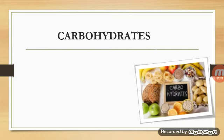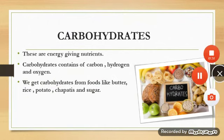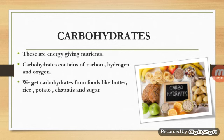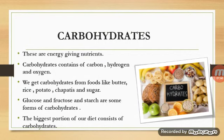What are carbohydrates? These are energy-giving nutrients. Carbohydrates contain carbon, hydrogen, and oxygen. We get carbohydrates from foods like rice, potato, chapatis, sugar, glucose, and fructose. Starch is also a form of carbohydrate. The biggest portion of our diet consists of carbohydrates.